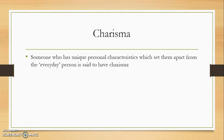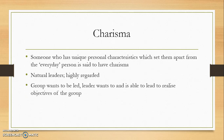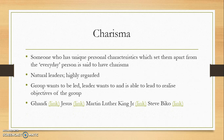Charisma: someone who has unique personal characteristics which set them apart from the everyday person is said to have charisma. These people are usually natural leaders, highly regarded by members of society. The conditions needed for charisma to manifest as positive deviance are: the group wants to be led, and the leader wants to and is able to realize the objectives of the group. Gandhi, Jesus, Martin Luther King, and Stephen Biko are all good examples. There are various clips available for each — go through and have a look.